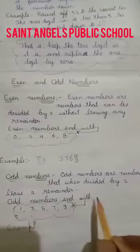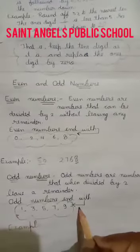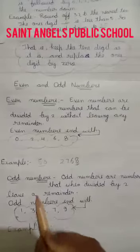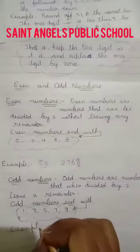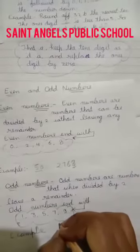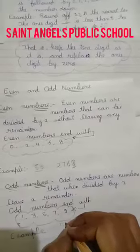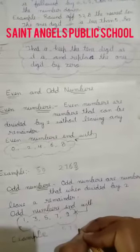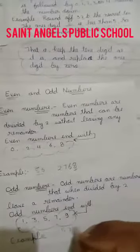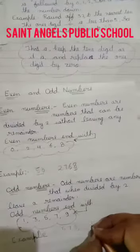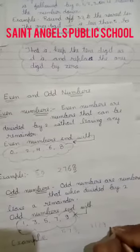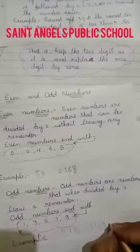Next rule: odd numbers end with 1, 3, 5, 7, or 9. Jab aapke number ka end 1, 3, 5, 7, 9 ke saath hota hai, ho aapka odd number hota hai. Now look at examples: 573 ends with 3, so 573 is odd. 3,169 ends with 9, so 3,169 is odd.